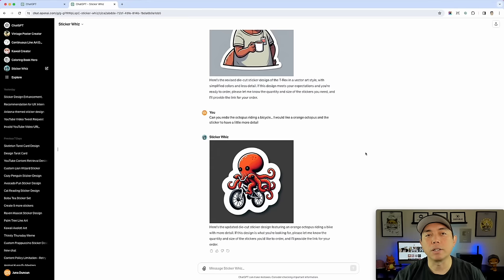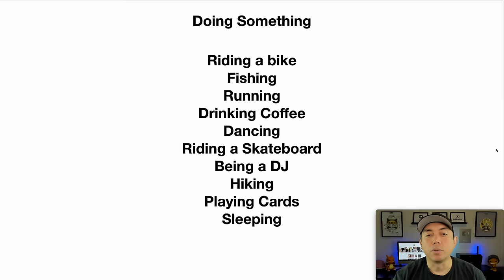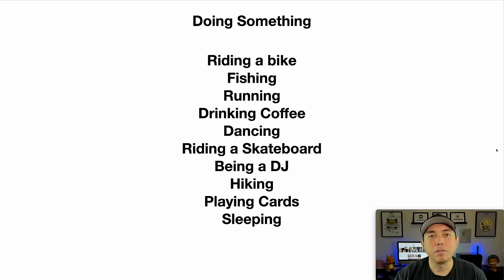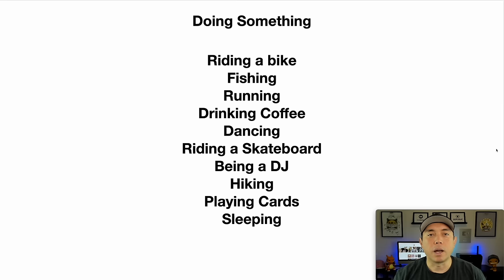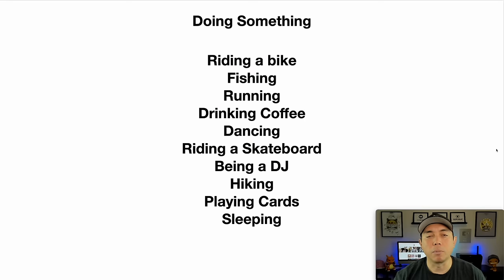To recap hack number one — having your character do something — some ideas you can use: fishing, running, drinking coffee, dancing, riding a skateboard, being a DJ, hiking, playing cards, sleeping — literally anything. The Olympics are coming up so any of those sports would be great. Playing video games, things outdoors. Anything that an animal, fruit, or skeleton could be doing makes your sticker more exciting and relatable. If you have a cat doing a certain thing, a person who likes that same thing might want to pick up that sticker — you're trying to make it relatable to your audience.